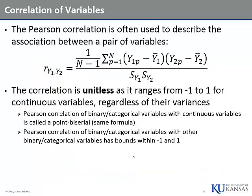Here's that formula for the correlation. As you know, correlation ranges from negative one to one, so long as you're using quantitative continuous variables. If you have variables that are categorical in nature, correlation is not guaranteed to go between negative one and one — it may be a smaller range. That will be problematic for us when we get to different data types in SEM.